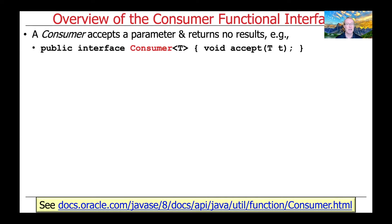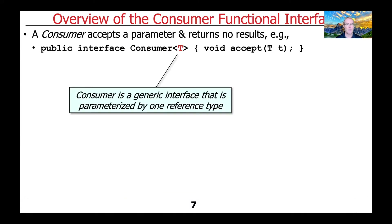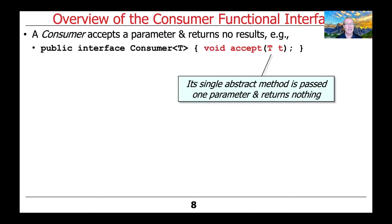As you can see, the Consumer interface is parameterized by one generic parameter T, and it has a single abstract method called Accept that takes an instance of parameter T and returns no results.